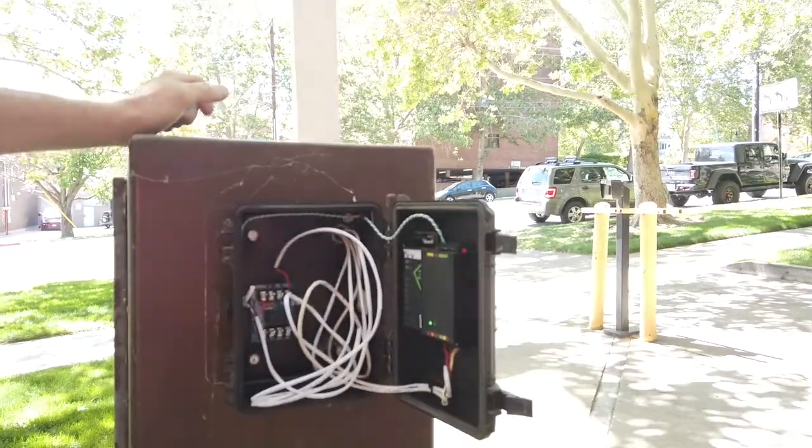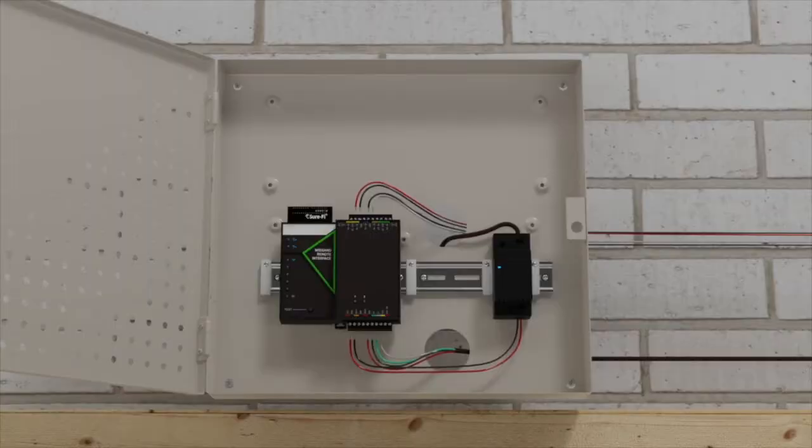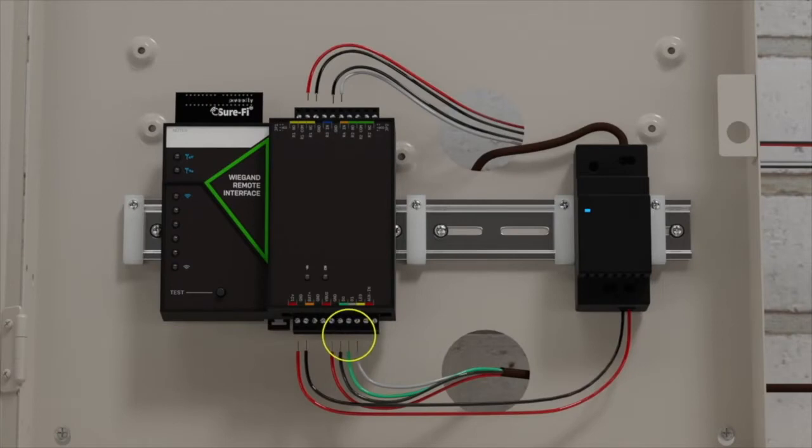Install the SureFi remote interface in an enclosure near the Wiegand device. Connect your ground, data 0, and data 1 to the Wiegand inputs on the bottom of the device. You can also power the device from the VBUS terminal.